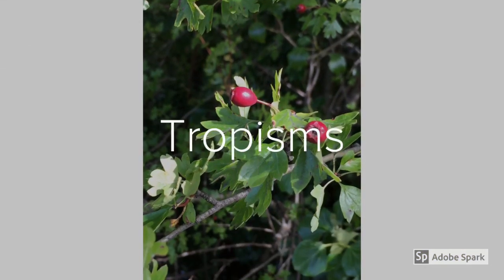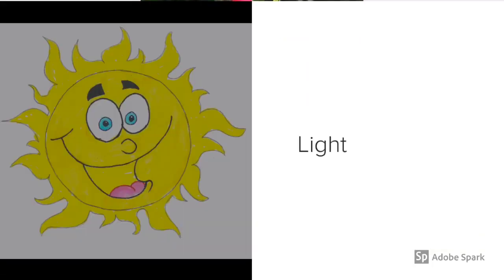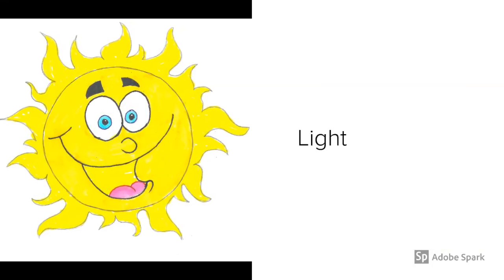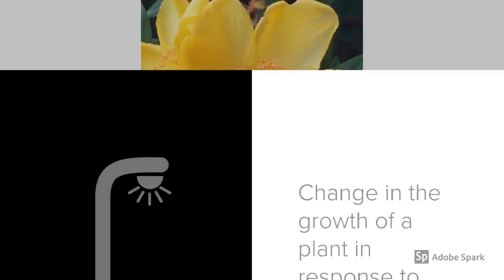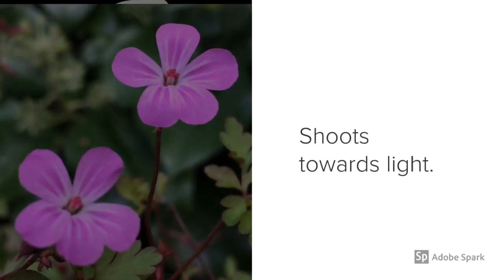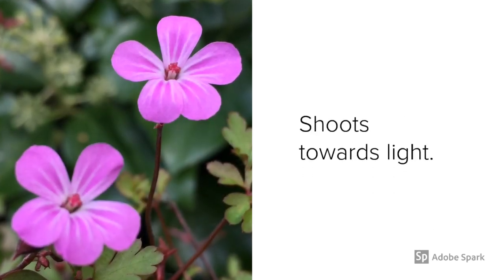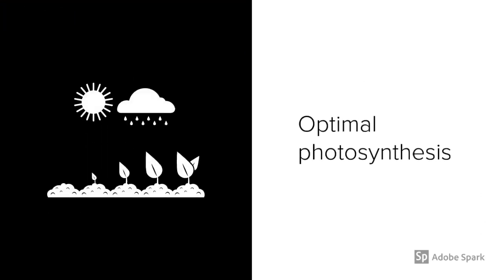Let's run through some specific tropisms. The way in which plants respond to the stimulus of light is known as phototropism — the change in the growth of a plant in response to light. The shoots will grow towards the light, so they're positively phototropic. This ensures the plant will have the best chance of photosynthesizing.